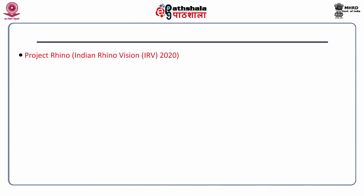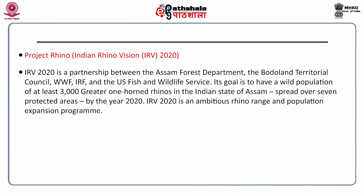Project Rhino, also called India Rhino Vision 2020 (IRV 2020), is a partnership between the Assam Forest Department, the Bodoland Territorial Council, WWF, IRF and the US Fish and Wildlife Service. The goal is to have a wild population of at least 3,000 greater one-horned rhinos in the Indian state of Assam, spread over seven protected areas, by the year 2020. IRV 2020 is an ambitious rhino range and population expansion program.